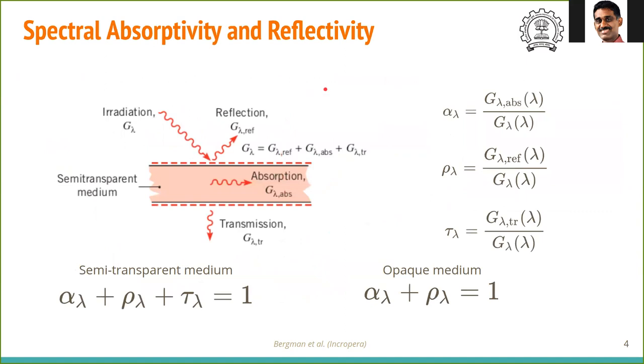Similarly, we can define quantities for the absorptivity, reflectivity, and transmittivity. This is the spectral absorptivity: out of the total irradiation that comes at a given lambda, part of that is absorbed. Out of the total radiation coming at a given lambda, part of it is reflected and part of it is transmitted. These factors are denoted by alpha for absorption, rho for reflection, and tau for transmission.